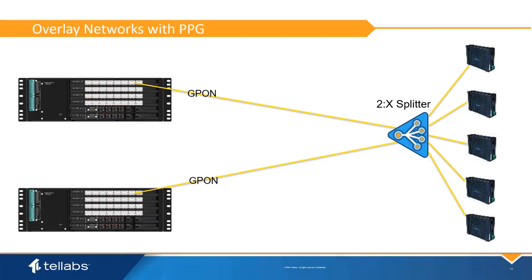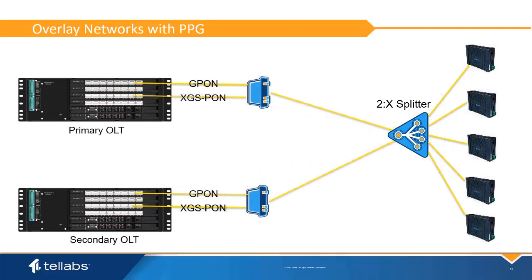Overlay networks are also supported for PPG-based networks. PPG, or PON Protection Groups, utilize Type B PON protection to enable protection from OLT and uplink network failures. PPG can be combined with overlay networks but requires some additional equipment to implement. Overlay networks with PPG require a combiner for both the primary and secondary OLTs, allowing the XGS-PON and GPON signals to be combined. The common output for each combiner is then connected to a two-input splitter.